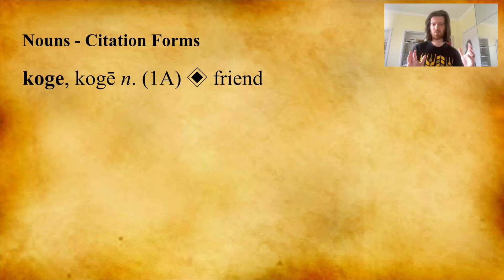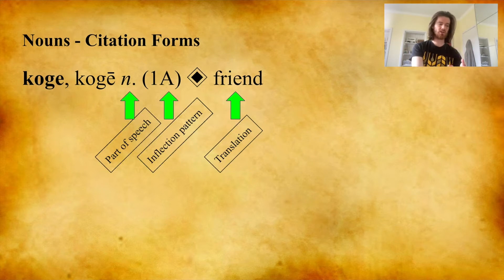If you look at the citation form for a noun in a Negere dictionary, you will see this. We're already familiar with the part of speech, the inflection pattern, and the translation, which are given for verbs — these are likewise given for nouns. The only changes are that the first and second entries in the dictionary form don't refer to tenses, because nouns don't inflect for tense or person.